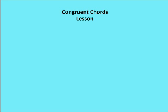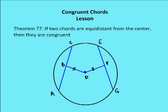What's a chord, and what are congruent chords? We define chords as the segment that connects two points on a circle. So in this case, AC is a chord and EG is a chord.